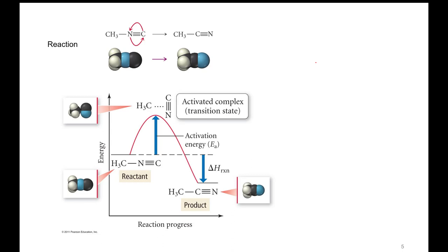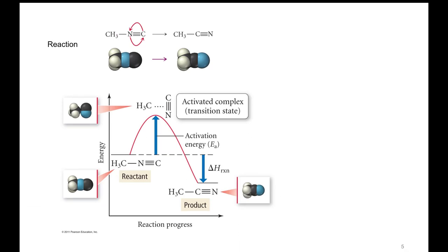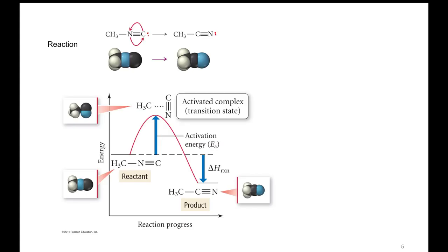As an example, let's look at this reaction. Here we have an organic molecule where we have a CH3 group bonded to a nitrogen, and then that nitrogen is triple bonded to a carbon. Not shown here would be the lone pair of electrons on that carbon.